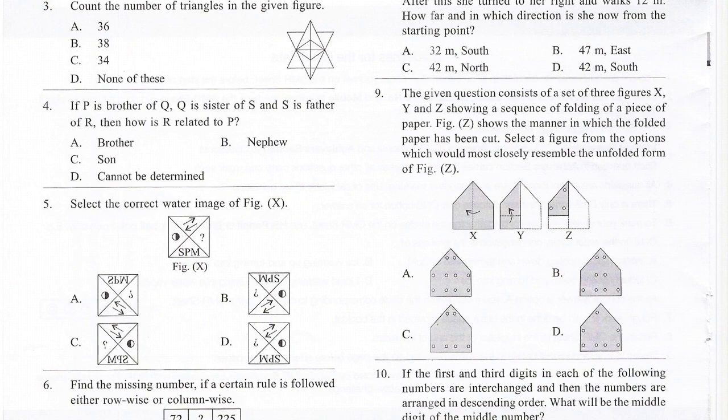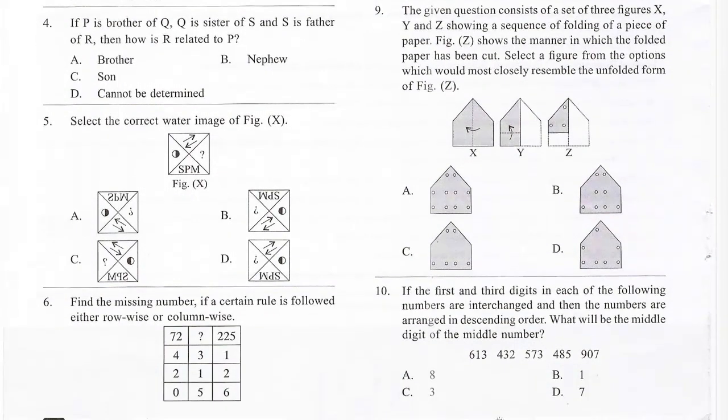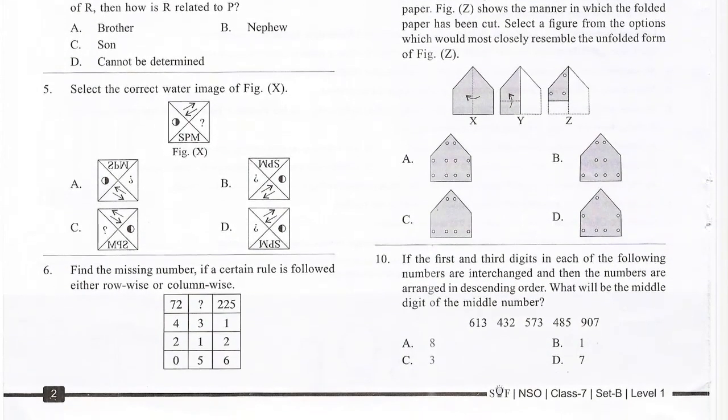Question 6: Find the missing number if a certain rule is followed either row wise or column wise.